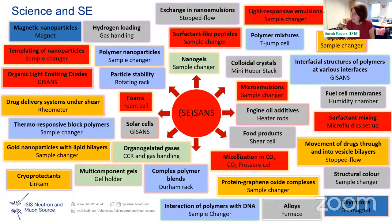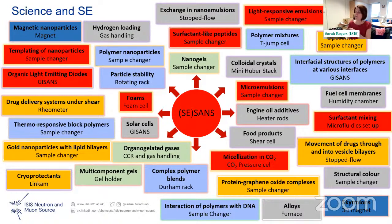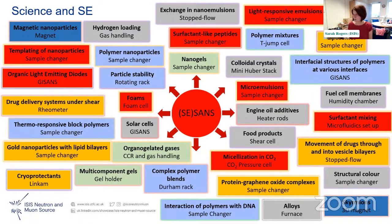Just to give you an idea of the sample environments we have available — we can look at magnetic nanoparticles using very large magnets, from half a tesla up to 14 tesla. We have sample changers for standard solution scattering. We can do grazing incidence measurements reflecting off a surface, and rheology — looking at systems under shear.